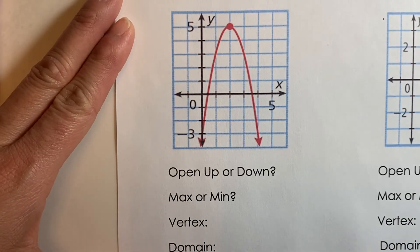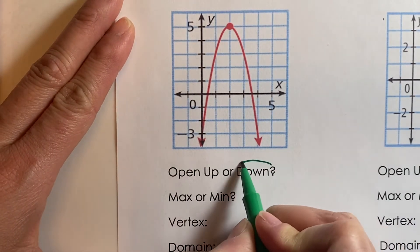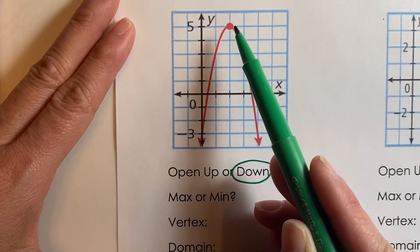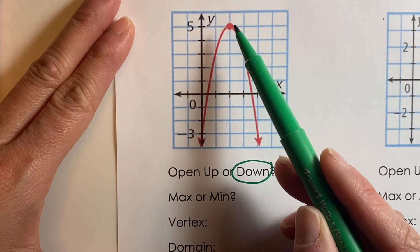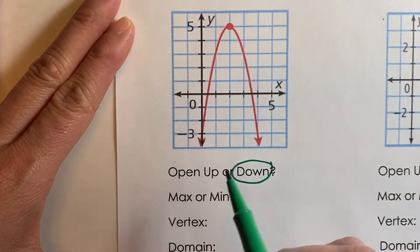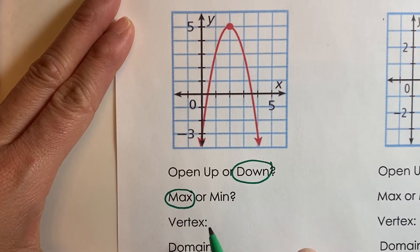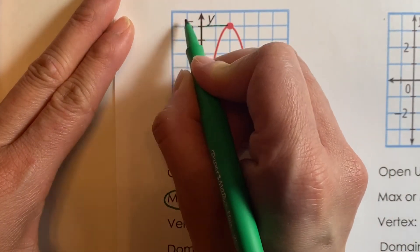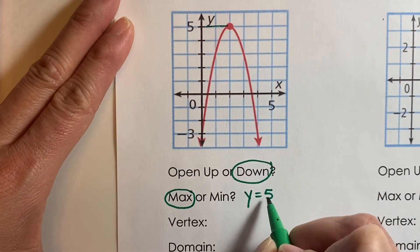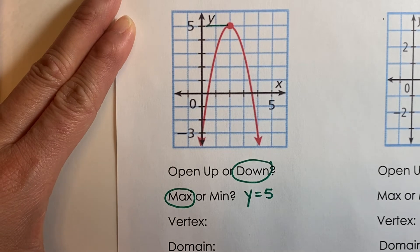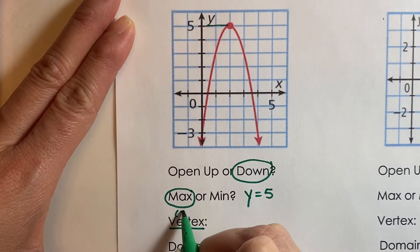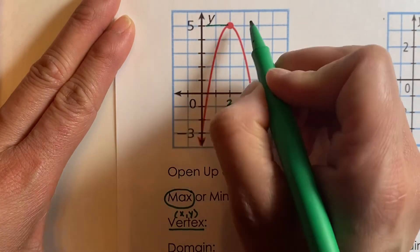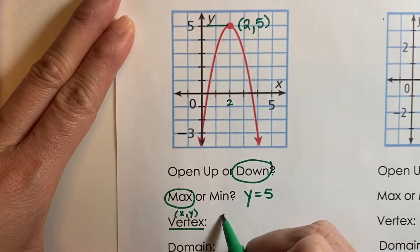First, is the graph opening up or down? This graph is opening down. Since it's opening down, the top point is a maximum value. The maximum value is the y value from the vertex, so y equals 5 is the maximum. The vertex is a point — the highest point in this graph — at 2 comma 5. The domain is all real numbers because there are arrows at both ends of the graph.